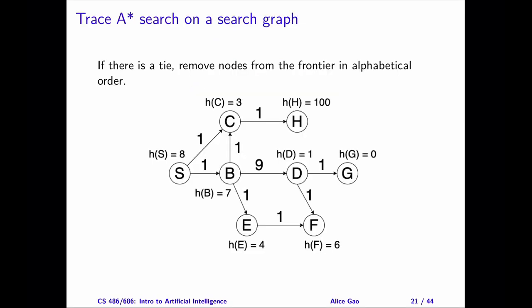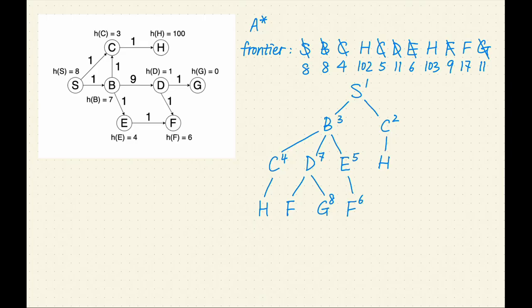Let's trace A-star on this search problem. We will use the same tie-breaking rule, removing the node from the frontier in alphabetical order. Pause the video, do this yourself, and then keep watching for the answer. Here is the search tree when A-star search terminates. I will describe the tracing process in a separate video.